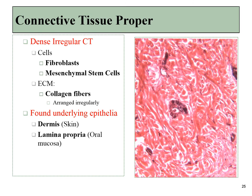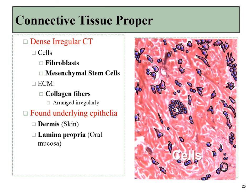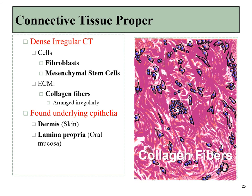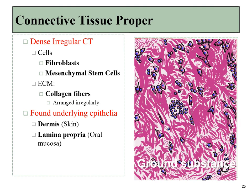Next up is dense irregular connective tissue, which includes cells and collagen fibers — and that's mostly what it has. The cells are mostly fibroblasts and mesenchymal stem cells, and the rest of that pink material are collagen fibers going in various directions, with a little bit of ground substance as well. In the case of dense irregular connective tissue, those fibers are pointed more or less at random. We will find a lot of dense irregular connective tissue underneath the epithelial layers found in the skin and the oral mucosa.